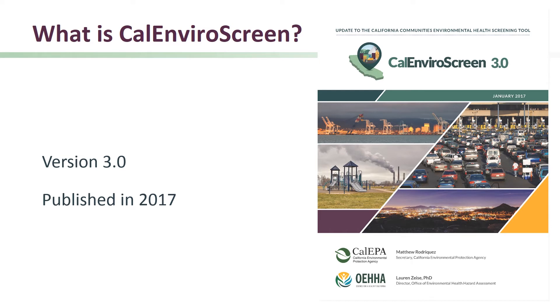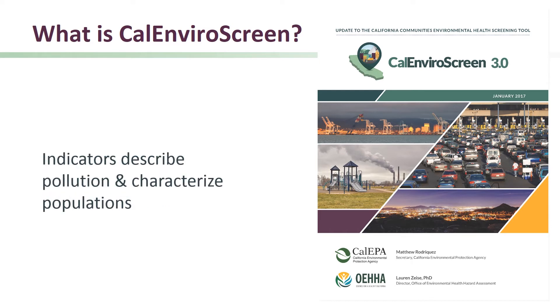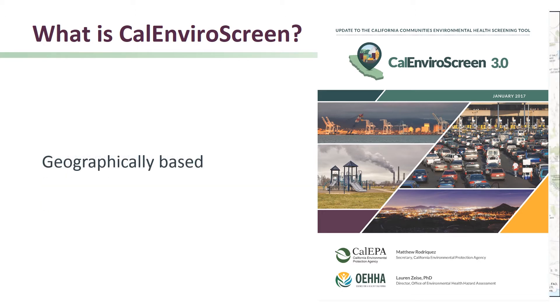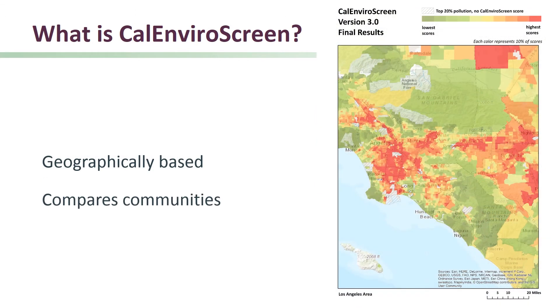The tool uses a set of indicators to characterize pollution and population characteristics within communities. It is geographically based and allows for comparison between different communities throughout the state.